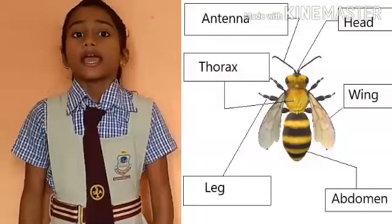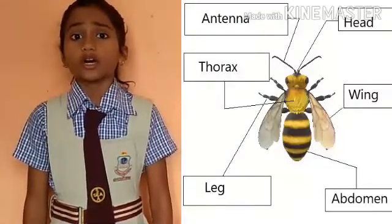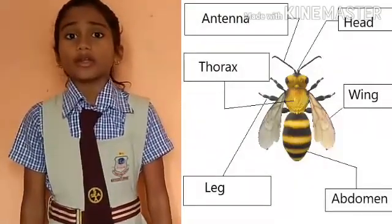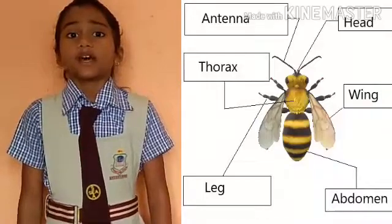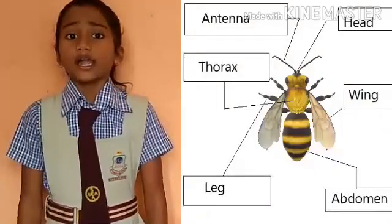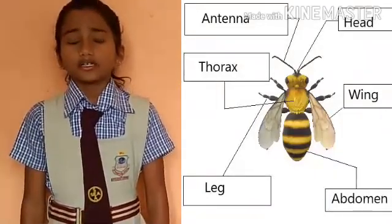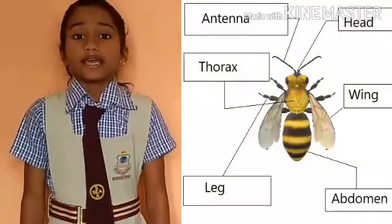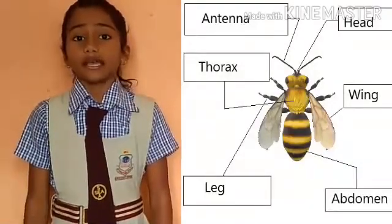They are head. Head is the front part of an insect's body. It contains a pair of eyes and a pair of antennae and a mouth.